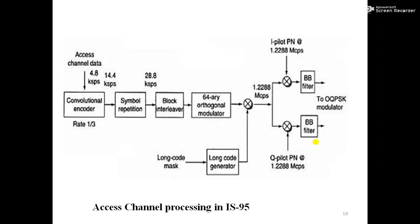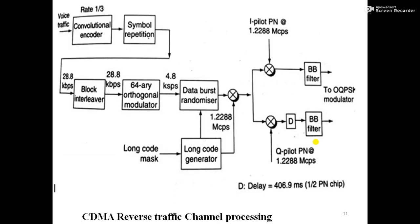When a mobile user places a call, it uses the access channel to inform the serving base station. The access channel is also used to respond to a page received from the base station. The reverse traffic channel carries user speech or data, similar to the forward traffic channel, and supports variable data rate operations with two sets of traffic channel data rates. The modulation and scrambling use offset QPSK; the near-constant envelope properties make transmission more efficient for a power-limited mobile user, as power control is more important on uplink than downlink.